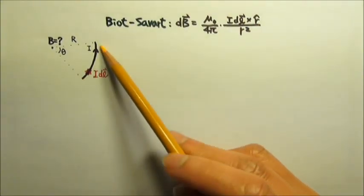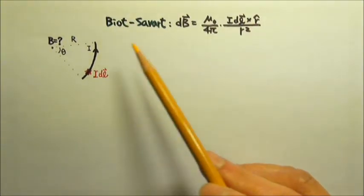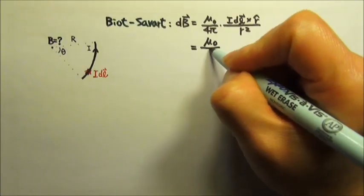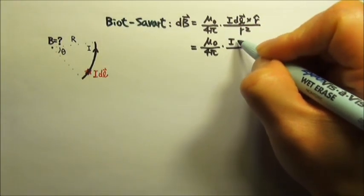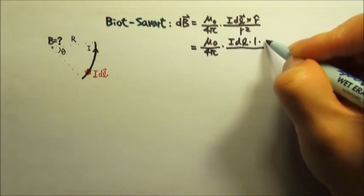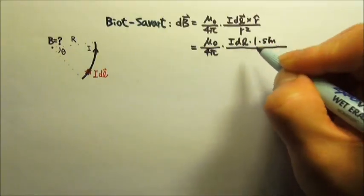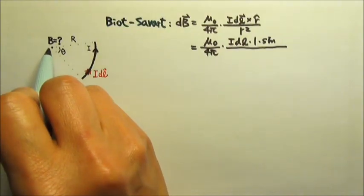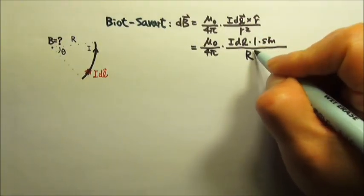We can chop the current into point current segments. The dB produced by this point current segment is that. So dB equals mu naught over 4π times I dL times the magnitude of unit vector which is 1 times sine the angle between the two and then divided by R squared. The R is the distance between the point source and the location we are interested in, so the distance is R, so it's the big R squared.